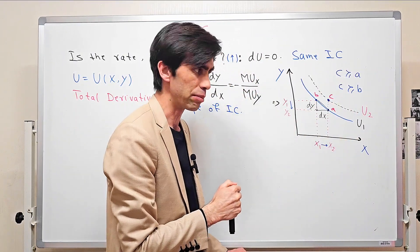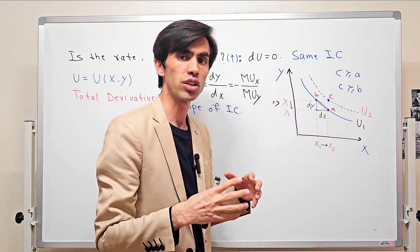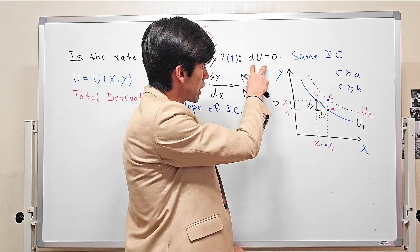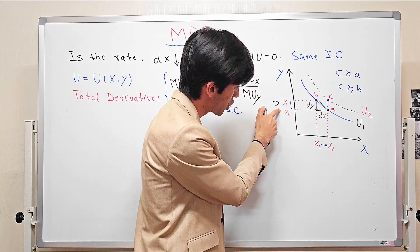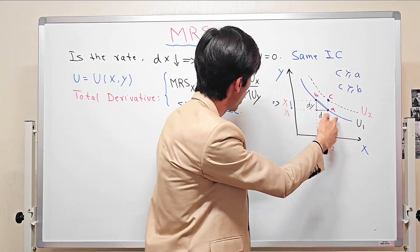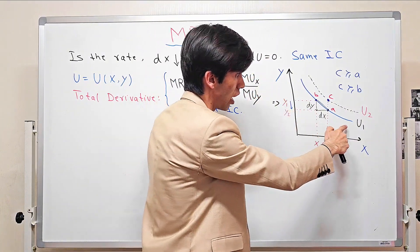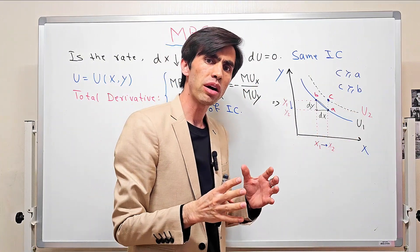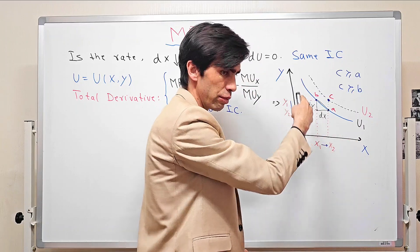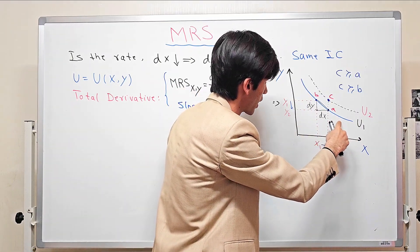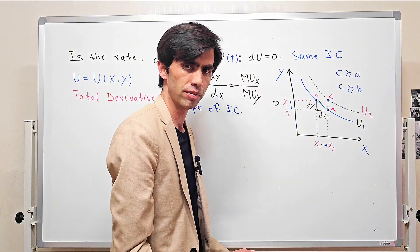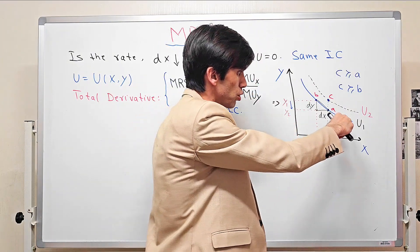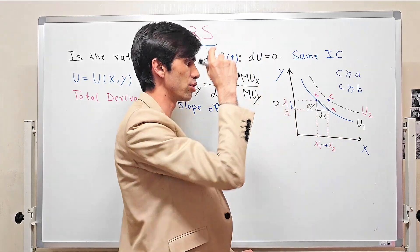Based on the monotonicity axiom of preference relations, more is better — more of a good is always better and provides more utility. At point C, although we have the same level of y, we have more of x. So point C will provide higher utility than points A and B, meaning we prefer C to A and C to B. This contradicts the definition of marginal rate of substitution, where we said we keep the overall utility level fixed. If we do not change the y level, we move to another indifference curve u2, which provides higher utility. The way to keep utility fixed is to move along the indifference curve, because each point on the same indifference curve provides exactly the same amount of utility.